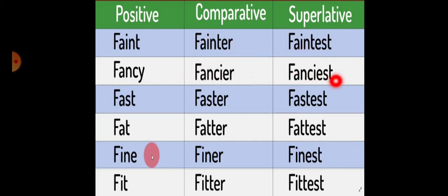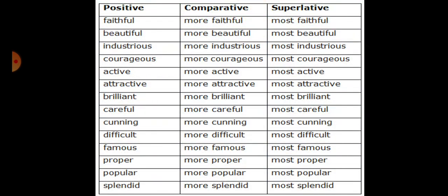Some more examples: faint, fainter, faintest; fancy, fancier, fanciest; fast, faster, fastest. But there are some adjectives which follow a different pattern—we use more and most with their comparative and superlative degrees. Let me give you a tip: most often, adjectives with double or triple syllables—